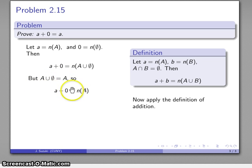So a plus 0 is the same as the cardinality of A. Again, the equality says anytime you see the one thing you can immediately replace it with the other. So here I have A union the empty set, I could replace it with just A, and so a plus 0 is the same as the cardinality of A, but I already know what that is.